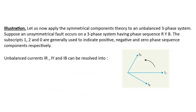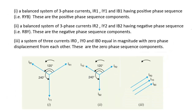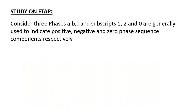Let us now apply the symmetrical components theory to an unbalanced three phase system. One: a balanced system of three phase currents IR1, IY1, and IB1 having positive phase sequence, that is R, Y, B — these are the positive phase sequence components. Two: a balanced system of three phase currents IR2, IY2, and IB2 having negative phase sequence, that is R, B, Y — these are the negative phase sequence components. Three: a system of three currents IR0, IY0, and IB0 equal in magnitude with zero phase displacement from each other — these are the zero phase sequence components. Consider three phases ABC; subscripts 1, 2, and 0 are generally used to indicate positive, negative, and zero phase sequence components respectively.